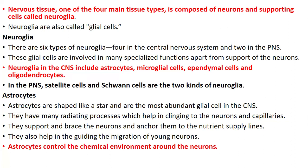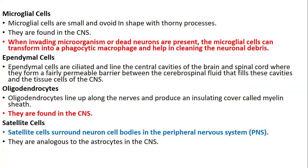Astrocytes in the central nervous system control the chemical environment around the neurons. If the chemical environment is not controlled, the transmission and activity of the nerve will not function properly, causing a nervous system disorder. Microglia, also in the central nervous system, act as phagocytic macrophages and help clean up neuronal debris in case of invasion by a microorganism—they engulf the microorganism, kill it, and dispose of it, just like macrophages do.